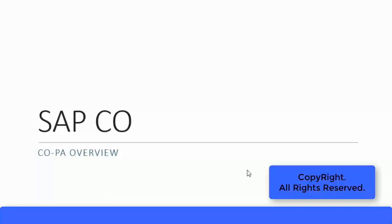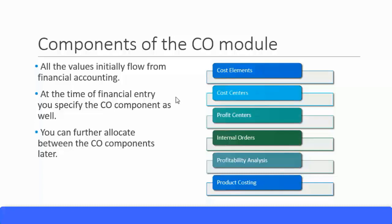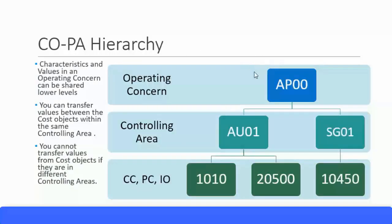Let's look at the profitability analysis in this section. In our previous sections, we have covered cost elements, cost centers, profit centers, internal orders, and now we look at profitability analysis. These are all the other CO objects and there is a lot of relationship with profitability analysis. Profitability analysis is within the controlling module, so CO. From now on, we'll refer to it as COPA.